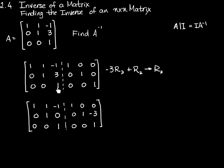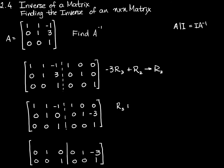Now I've used row 3 to change row 2. Now I'm going to use row 3 to change row 1. I can add these two rows together to get my new row 1. Row 2 is not changed. Row 3 is copied as is. Adding row 3 to row 1: 0 plus 1 is 1, 0 plus 1 is 1, 1 plus negative 1 is 0, 0 plus 1 is 1, 0 plus 0 is 0, and 1 plus 0 is 1.